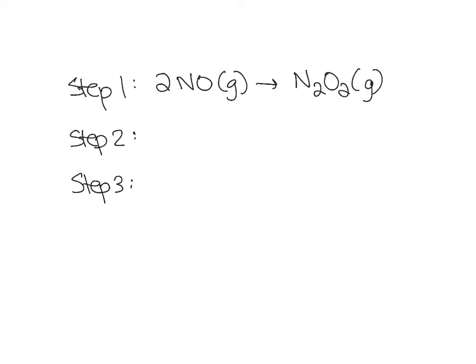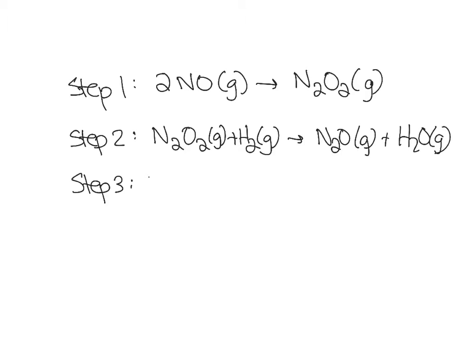In a second step, that N2O2 molecule collides with an H2 molecule, and we get N2O and a water. And then in a third step, the N2O that got made in step two reacts with the other H2 to make N2 and H2O.